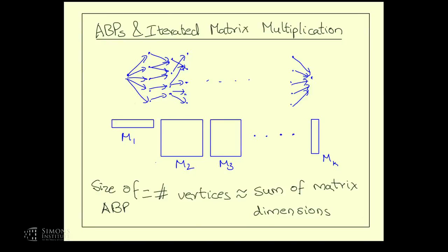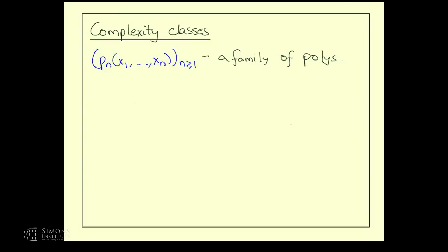Just like for circuits and formulas, the size of an algebraic branching program is the number of vertices. We've now introduced three computational models: formulas, circuits, and algebraic branching programs. This is a non-uniform model, so we talk about families of polynomials. For example, the determinant gives one polynomial for every squared number of variables. A family of polynomials for me is one polynomial that appears reasonably frequently.